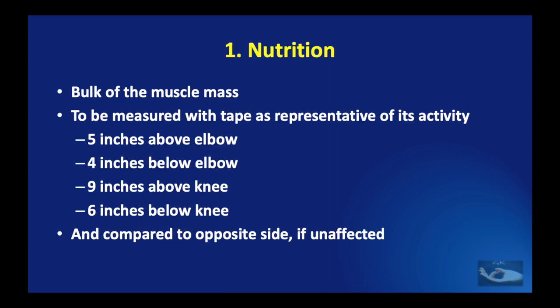The nutritional status of the muscle can be assessed indirectly by measuring the bulk of the muscle mass, usually with a tape measure. For the arm and forearm, measurements are taken five inches above and four inches below the elbow. For the lower limb, nine inches above and six inches below the knee. These measurements should be compared to the opposite unaffected side.